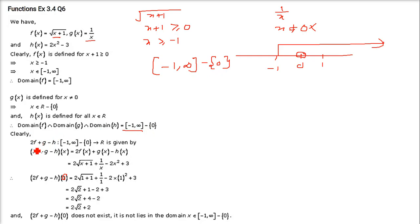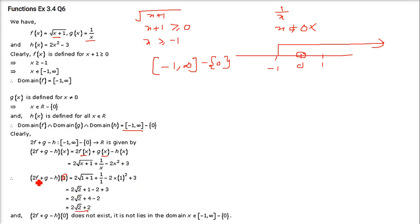So when we need to find 2f plus g minus h, we have 2f(x) = 2√(x+1), g(x) = 1/x, and minus (2x² + 3). When you put x = 1: 2√2, plus 1/1, minus (2·1² + 3) = 2√2 + 1 − (2+3) = 2√2 + 1 − 5. Wait — 3 plus 1 is 4, 4 minus 2 is 2. So this is 2f plus g minus h at x=1.